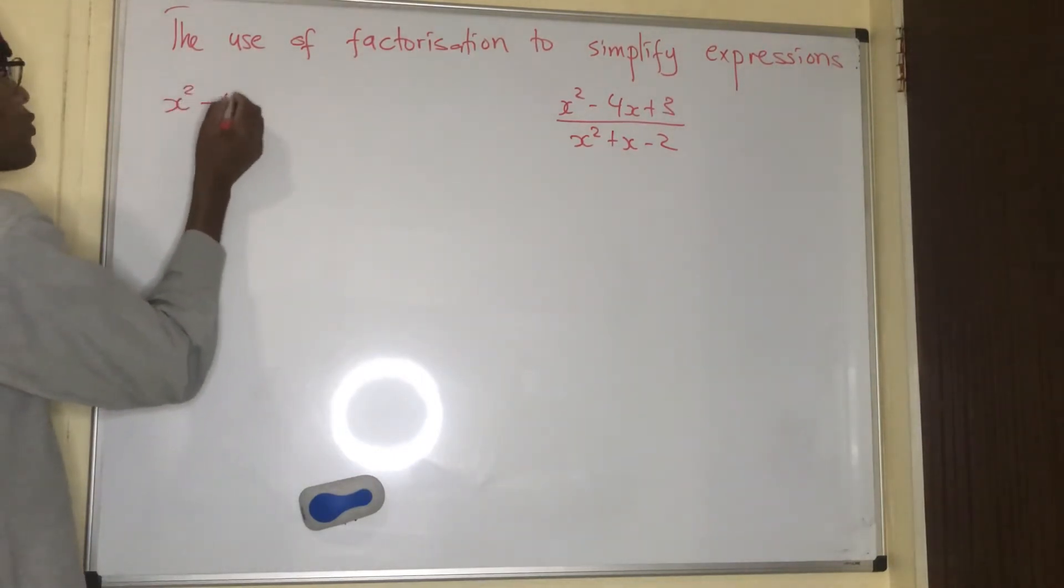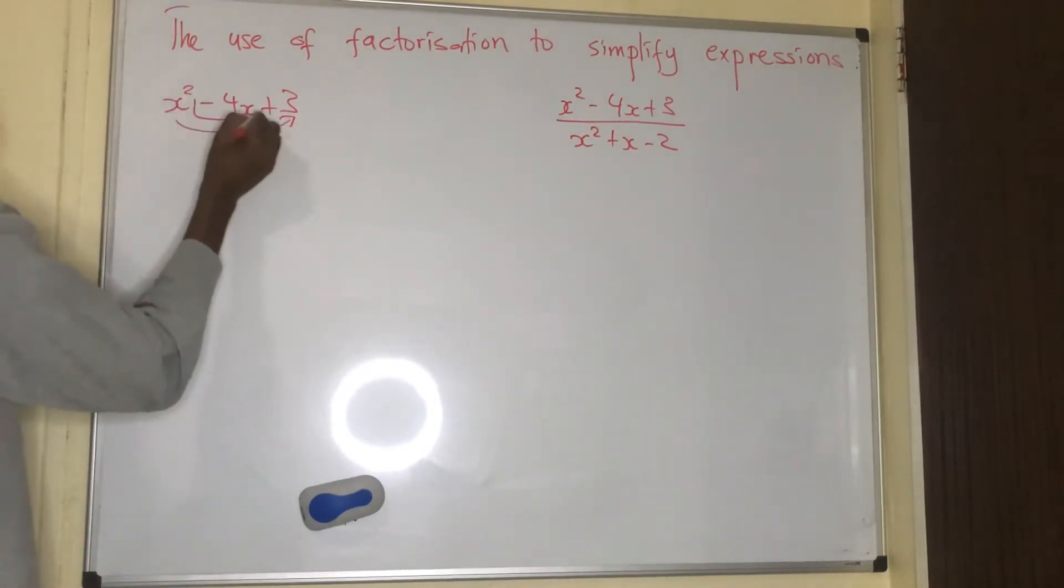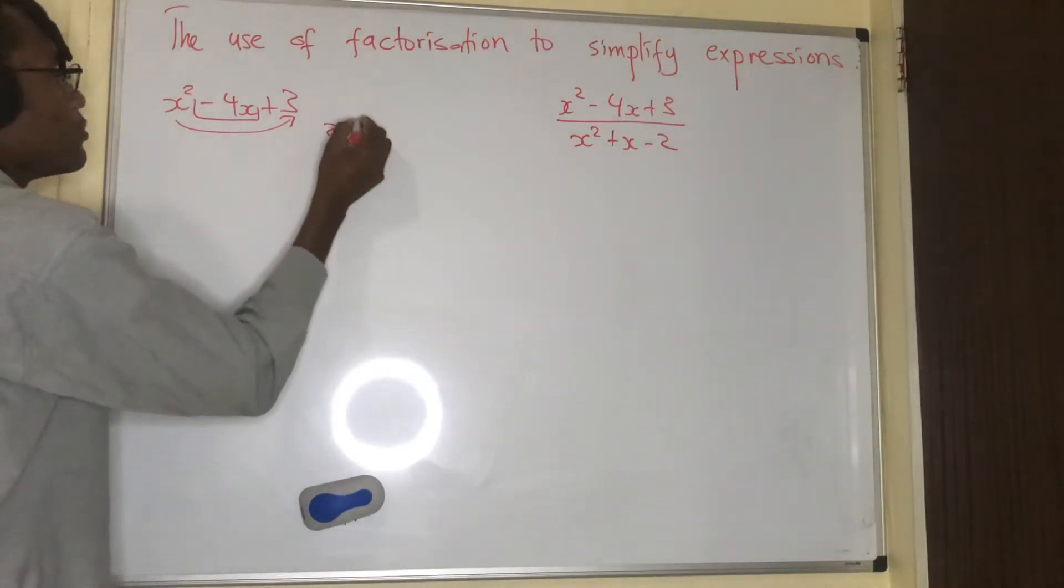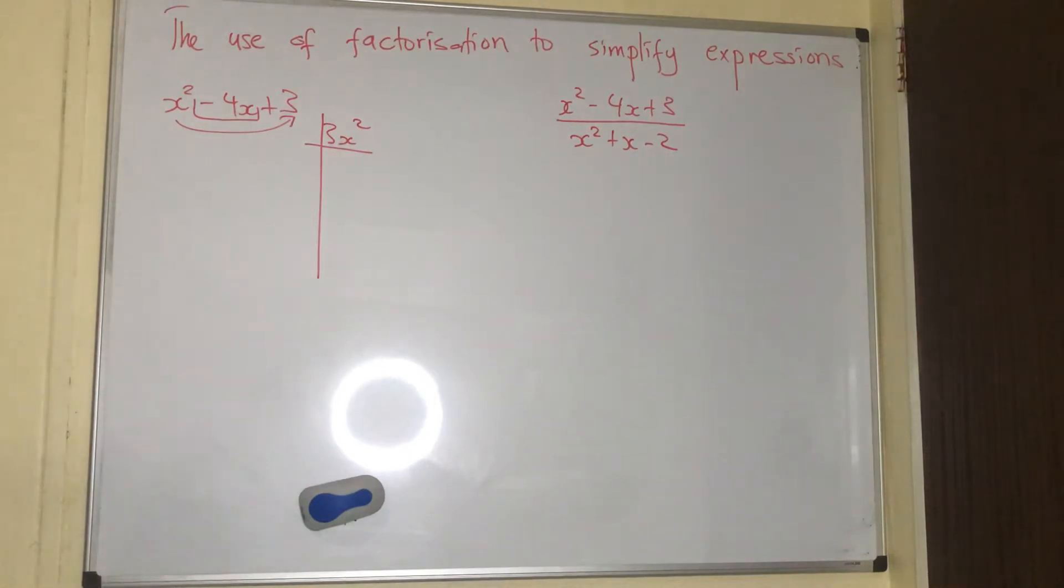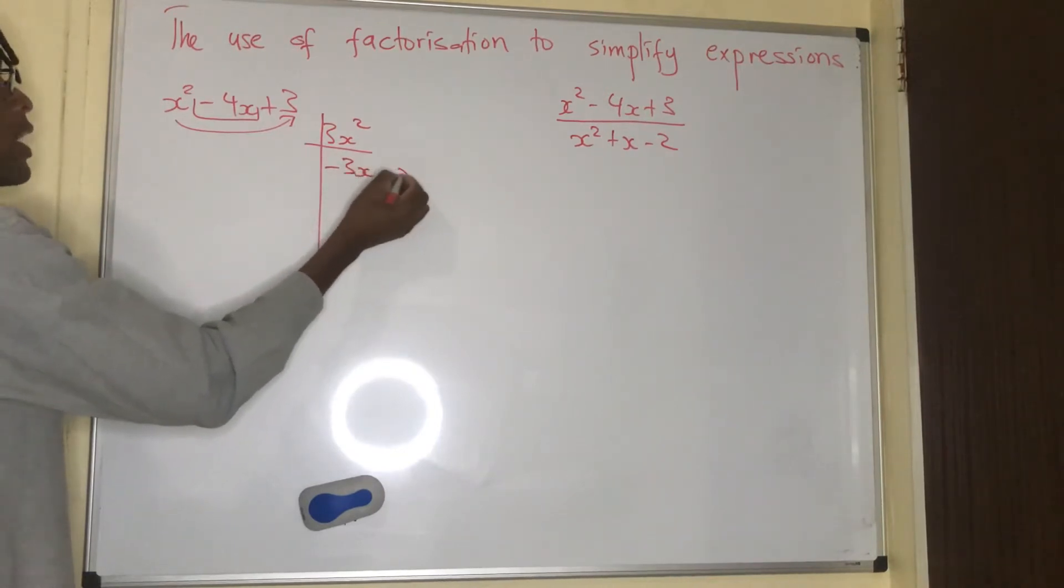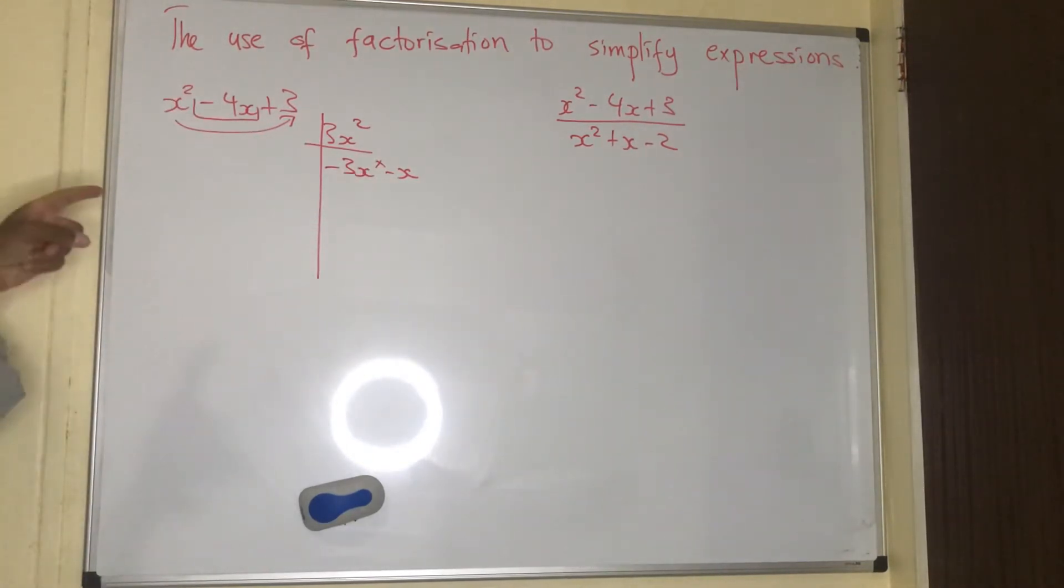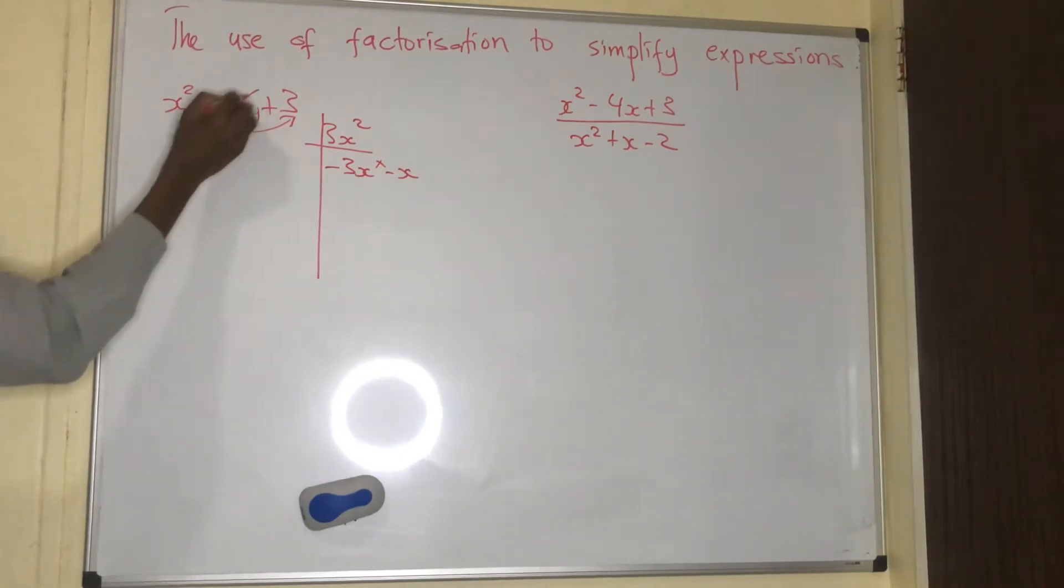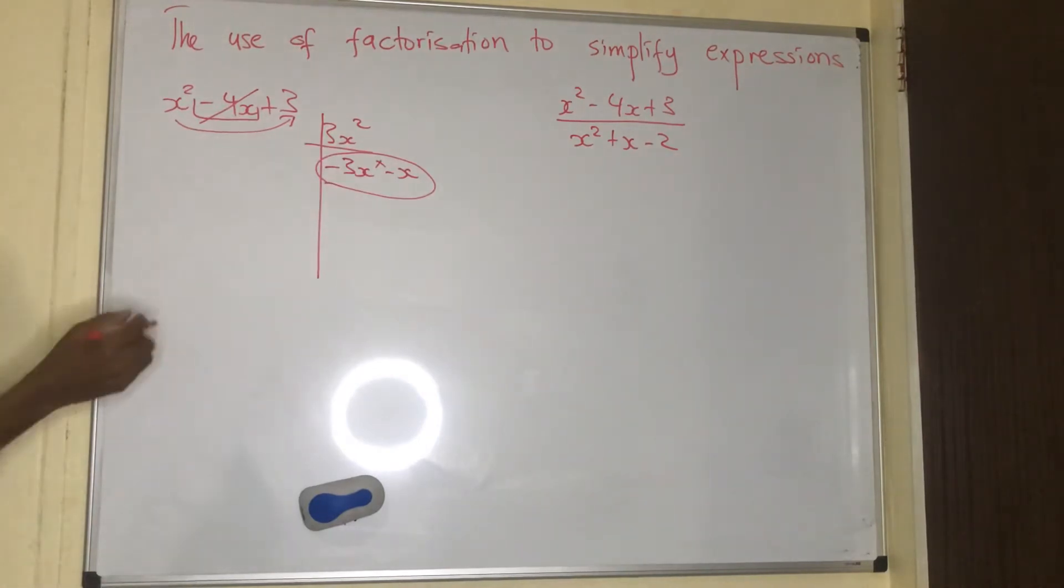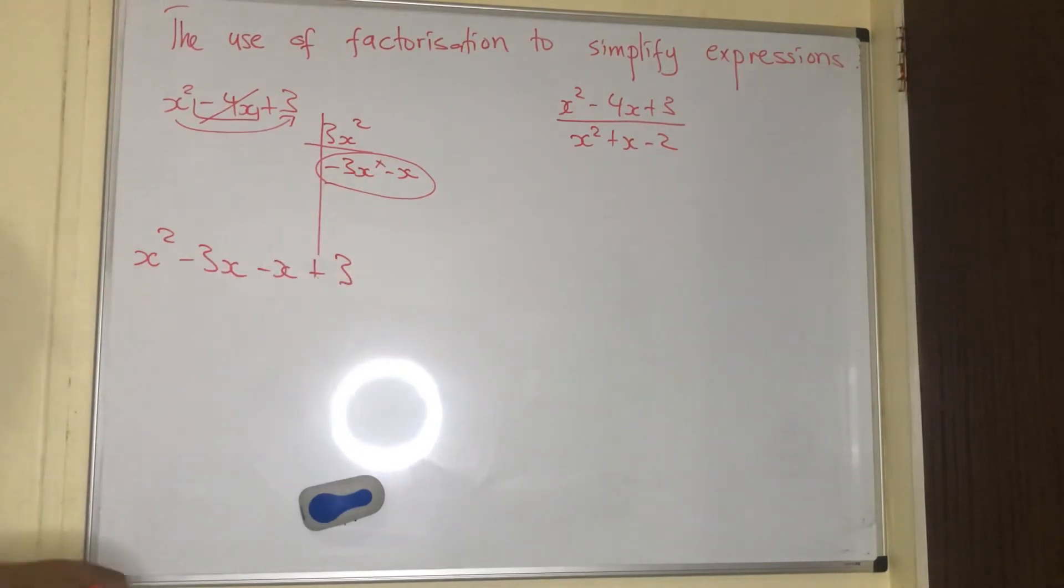We have x squared minus 4x plus 3. I will say x squared times 3. Remember, I told you you have to multiply x squared times 3 so that you can eliminate minus 4x. So there you get 3x squared. We need factors of 3x squared that when you multiply them give us 3x squared, and when you add or subtract them give us minus 4x. What are those factors? We have minus 3x minus x.